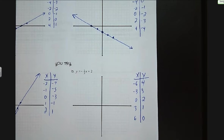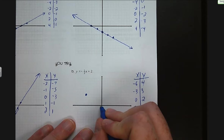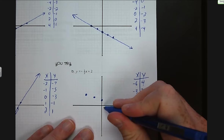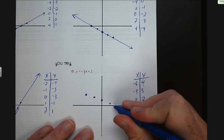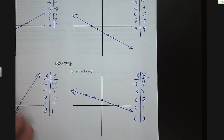We can go ahead and graph those points: negative six and four, negative three and three, zero and two, three and one, and six and zero. We can draw our straight line — make sure it has arrows on the end.